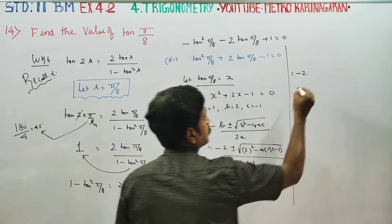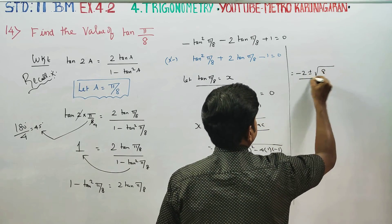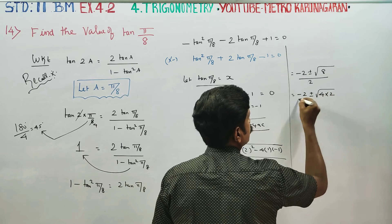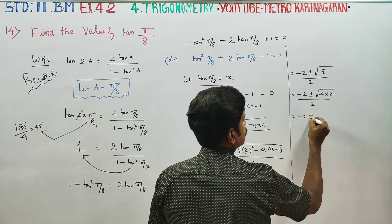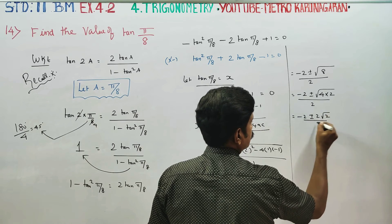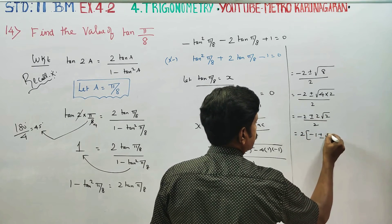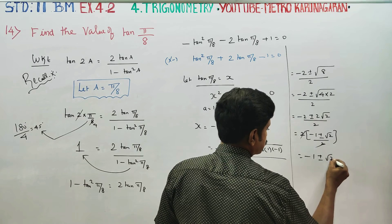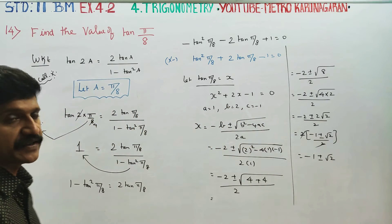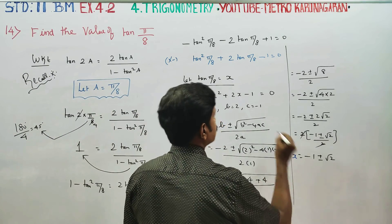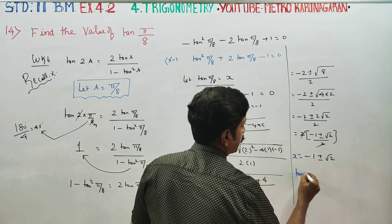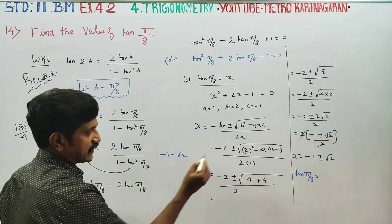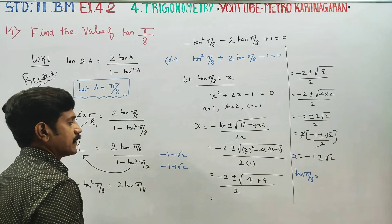This gives x = (−2 ± √8) / 2. Since √8 = 2√2, we get x = (−2 ± 2√2) / 2, which simplifies to x = −1 ± √2. So the two answers are x = −1 + √2 or x = −1 − √2.